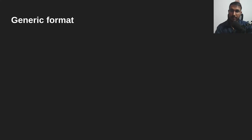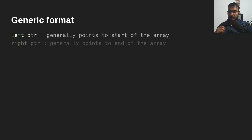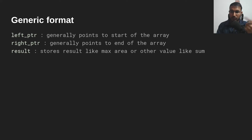Let me give you a generic format of two pointers that most solutions will follow. First, we will have a left pointer which is generally at the start of the array, and then a right pointer which is generally at the end of the array — or starting from zero and one, depending on the question. There is also a result variable, which is needed for questions like finding the area or finding two elements whose sum is closest to some target.